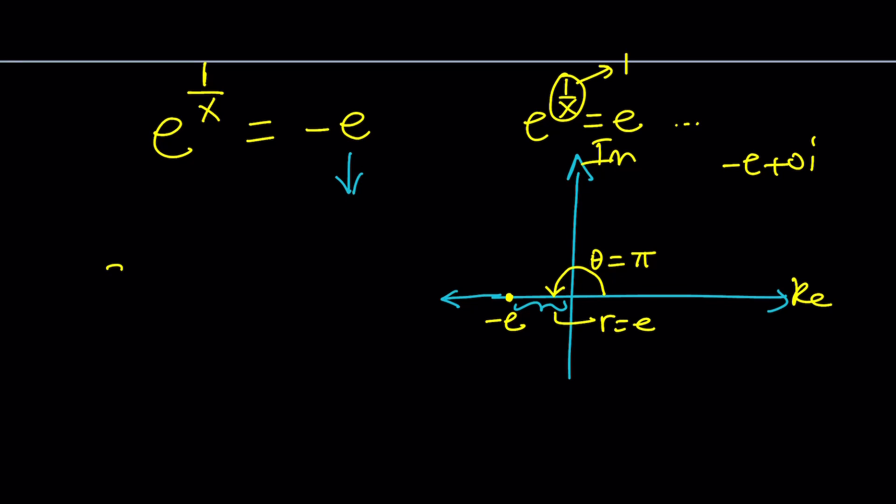So we can write any number as z equals r e to the i theta. In this case we can write the negative e as e times e to the power i theta. Theta would be pi, right? But that's just the principal value.